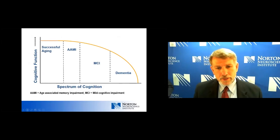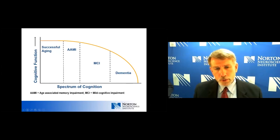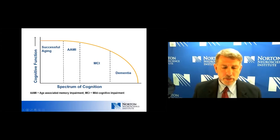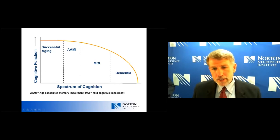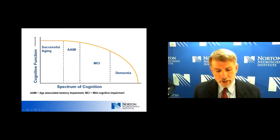This is a graphical representation of that spectrum. On the x-axis we have the spectrum of cognition, and cognitive function on the y-axis. At the far end we have successful aging — absolutely no change in cognition. Next we see age-associated memory impairment, another way of saying usual aging, with very mild or subtle changes in memory. Then mild cognitive impairment, where we have some clear decline beyond normal in at least one sphere of cognition — memory, language, or executive function — but not to the degree that it's significantly impairing daily activities. Finally, dementia involves impairments in multiple spheres of cognition, to the degree that we have real impairment in day-to-day activities.